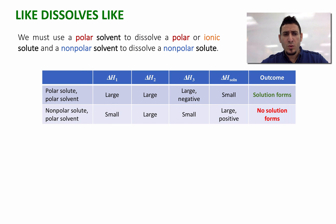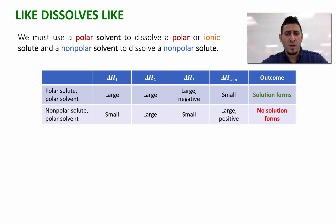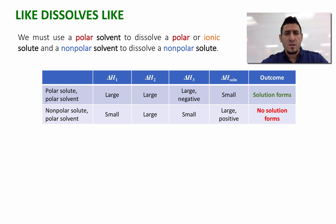In the case of a non-polar solute and a polar solvent, the interactions within the non-polar solute are weak, so ΔH1 is small. But the interactions between the polar solvent particles are strong, so ΔH2 is large positive. The interaction between non-polar solute and a polar solvent is going to be weak, and therefore ΔH3 is going to be small. In this case, ΔH_solution is going to be large positive thanks to the ΔH2 term, so the solution will not form.